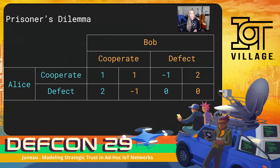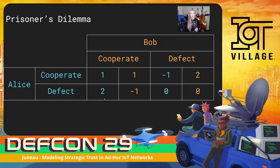Here I've drawn a payoff matrix for our prisoner's dilemma with our players Alice and Bob. Alice and Bob both have the choices to cooperate or defect. A little bit about where these numbers came from: each number just represents the amount of relative good to that player. So, for example, if Alice chooses to defect while Bob chooses to cooperate, she gets that payoff of two, which is the best possible outcome for her as a rational actor — the payoff she gets by going free. While similarly, Bob gets the payoff of negative one, the worst possible outcome, or being locked up. Now, this is just an example to show modeling.